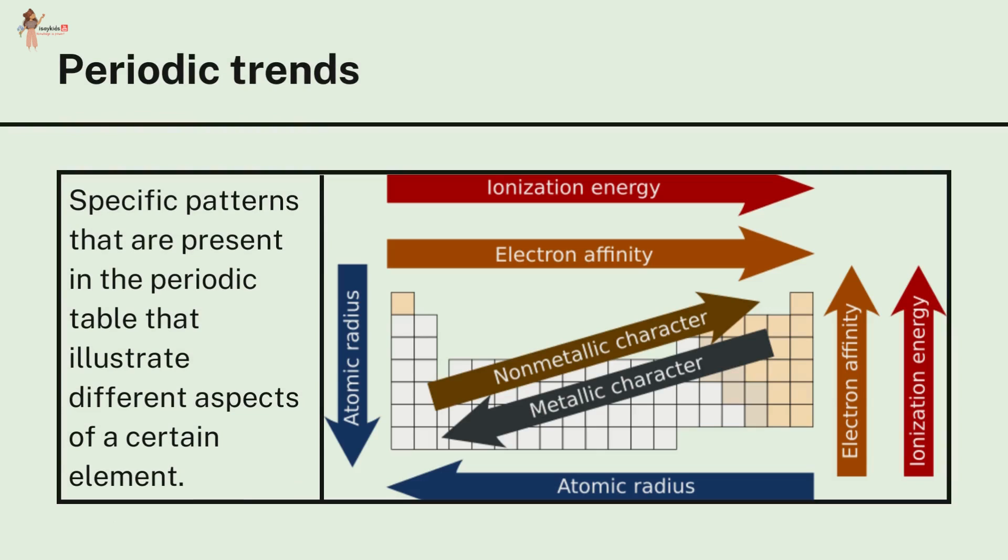Periodic trends are specific patterns that are present in the periodic table that illustrate different aspects of a certain element.